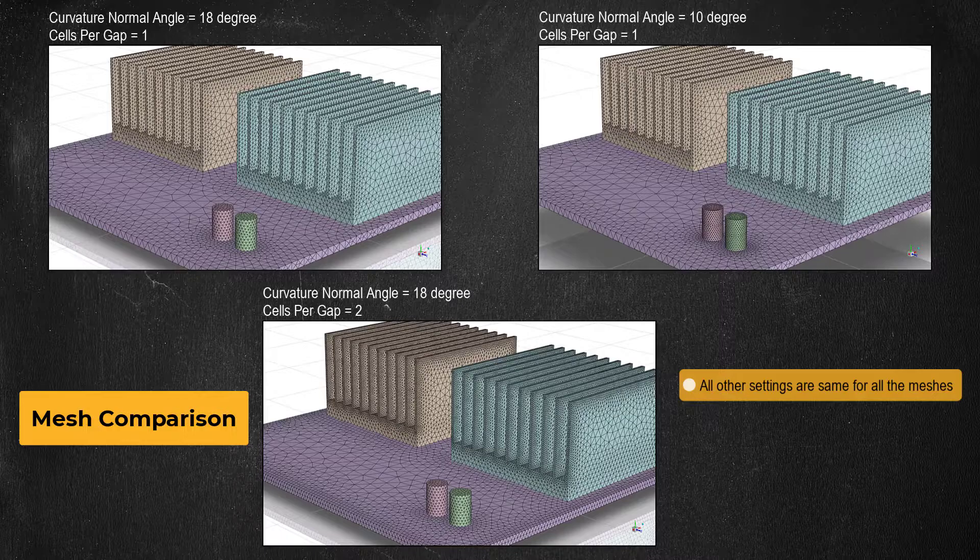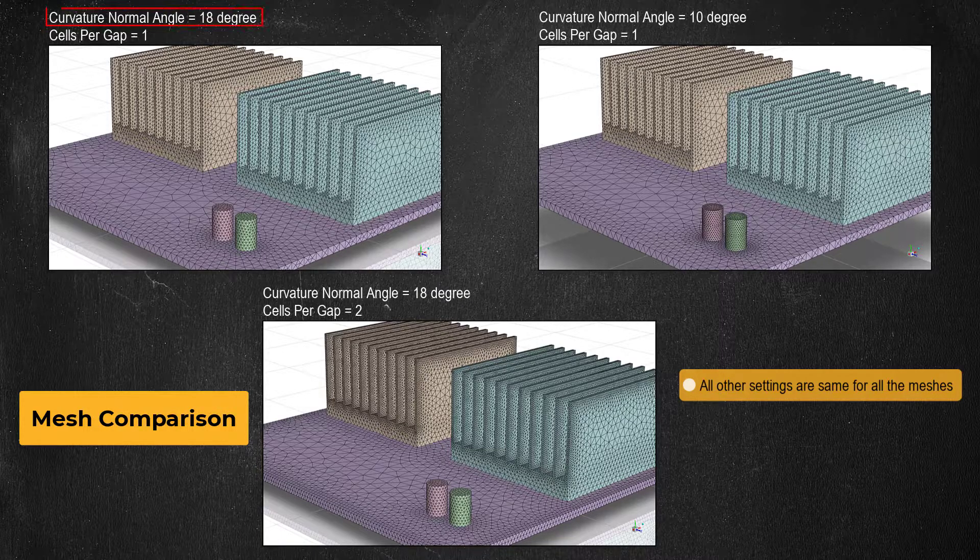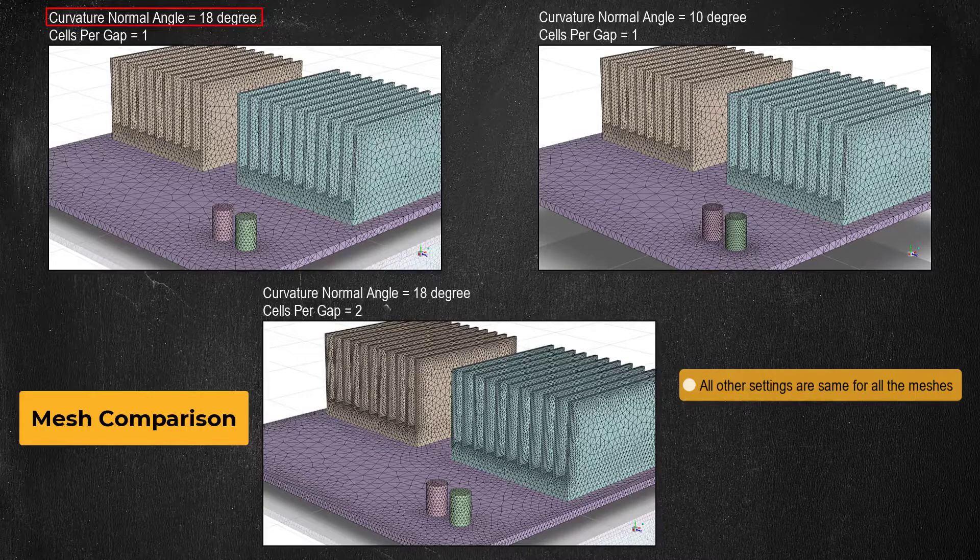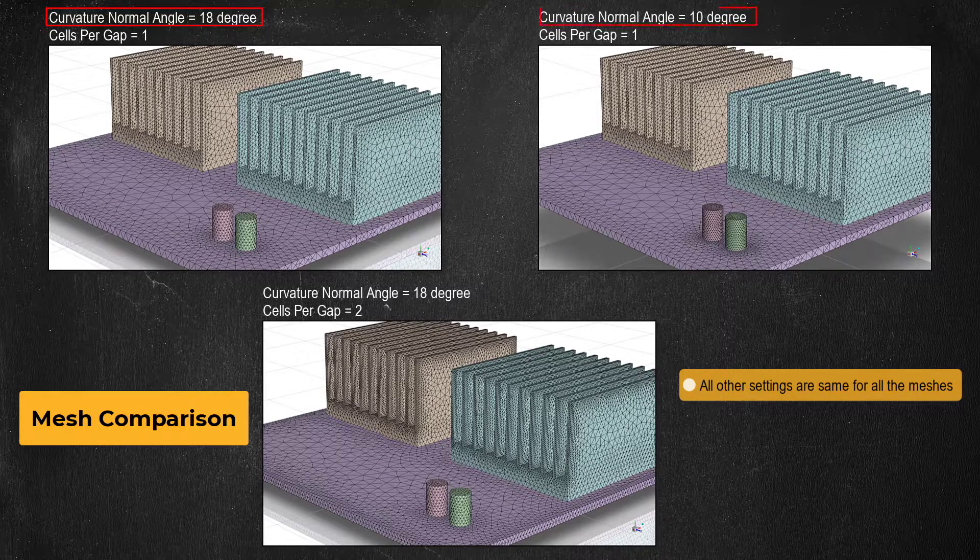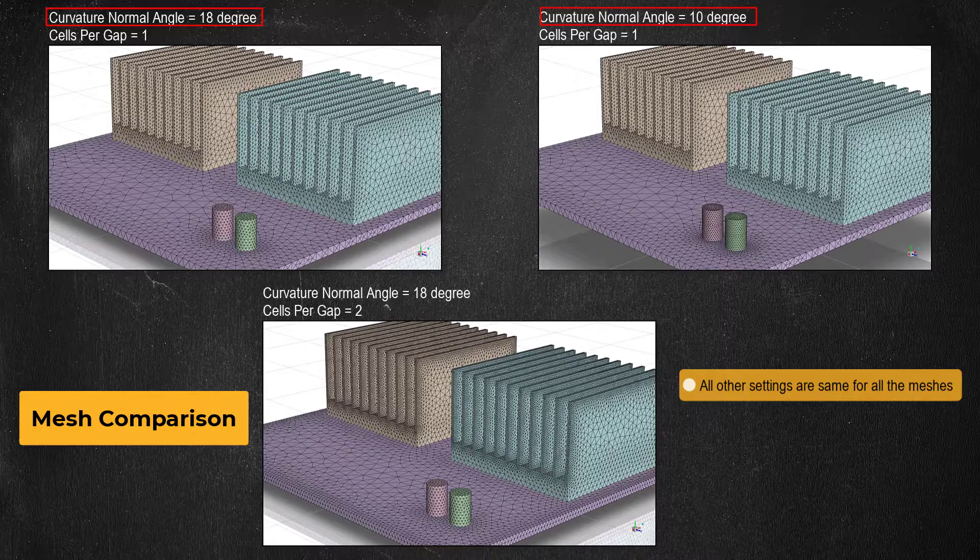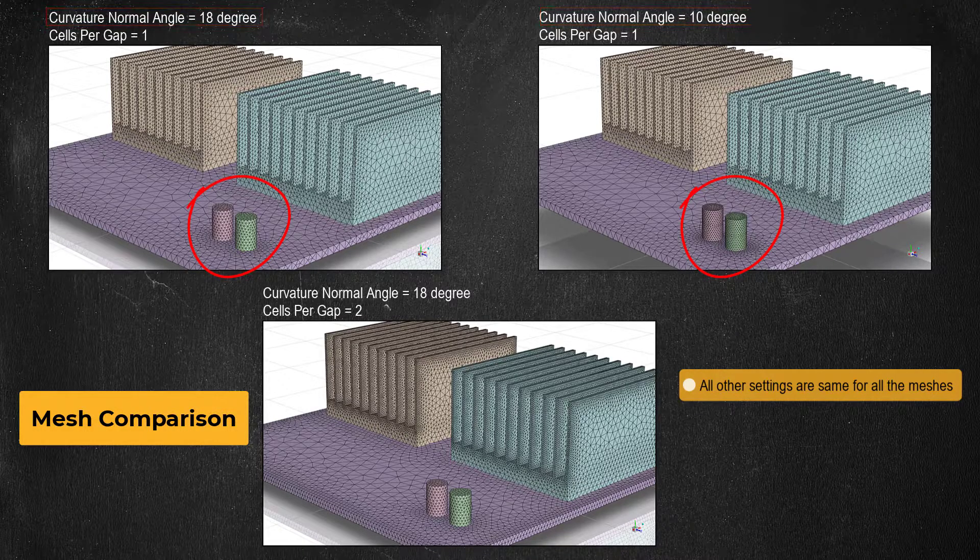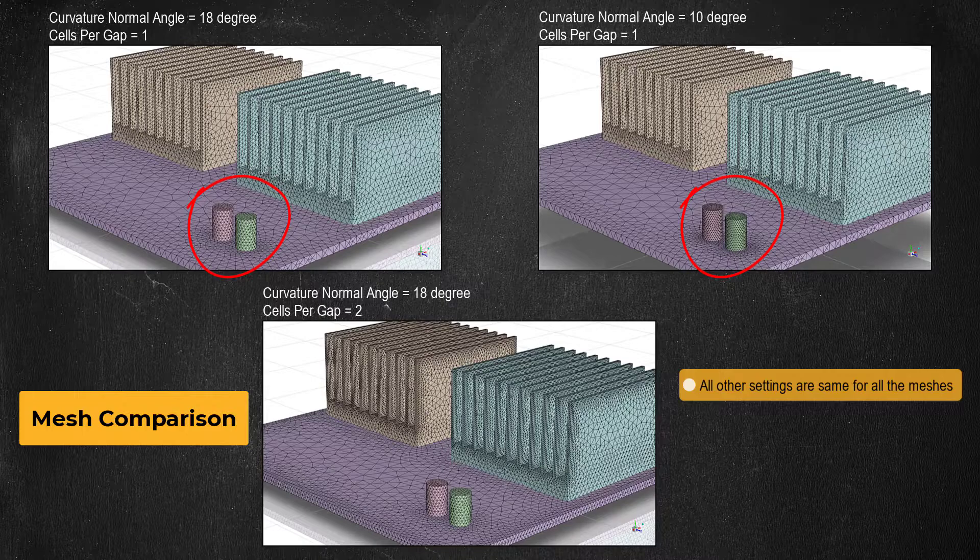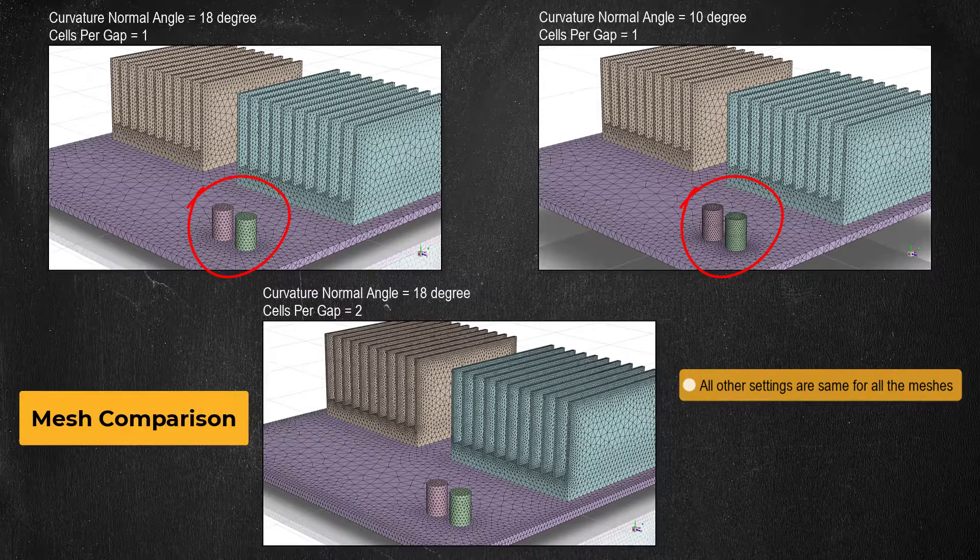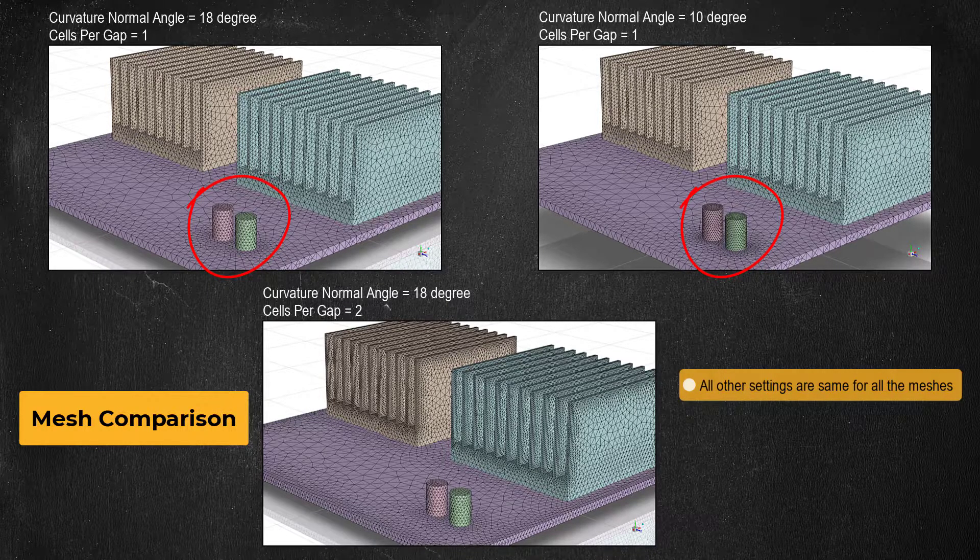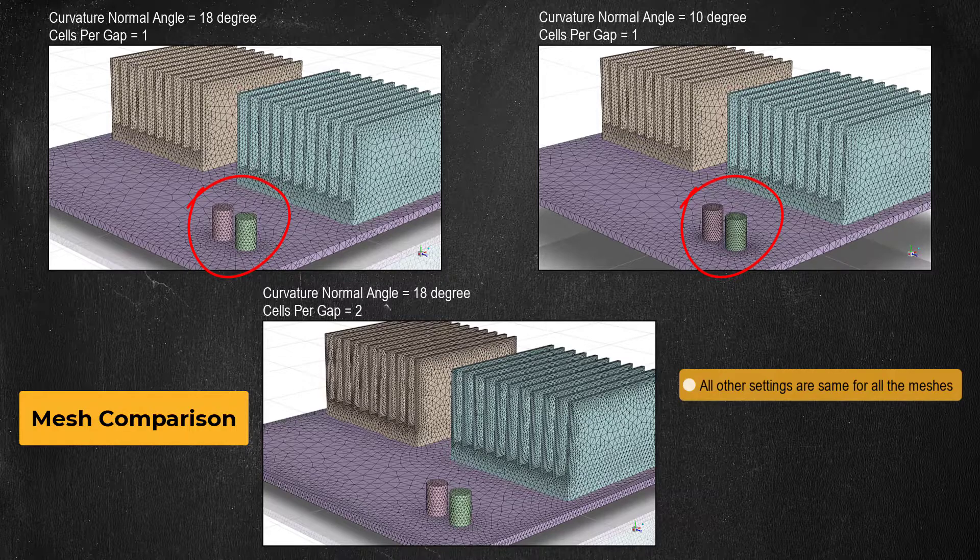For the mesh on the top left a value of 18, which is the default, was used. And for the mesh on the top right a value of 10 was used. Notice the increased number of cells along the circumference of the capacitors for the mesh on the top right. This is the impact of using lower curvature normal angle.